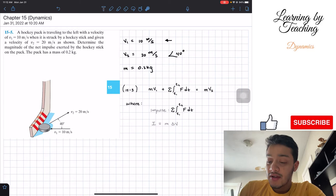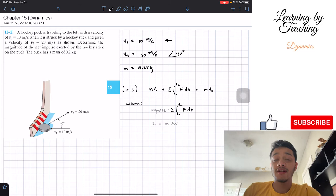If we were to rearrange this equation into a more simple equation, the impulse, I, will be equal to the mass times the change in velocity. So we are going to follow that.